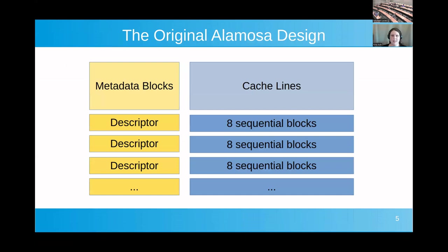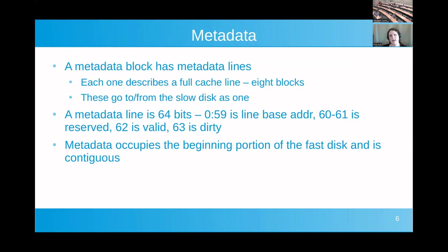What I ended up with is the original Alamosa. The disk is divided cleanly into two sections: a metadata section and a line section. The cache lines are eight sequential blocks brought in from the slow disk to the fast disk, each referred to by a 64-bit descriptor which lives in the metadata block. With a 512-byte metadata block you're describing 64 eight-block lines of actual disk data. This is pretty dense — we're only spending about 0.2% of the disk on metadata.